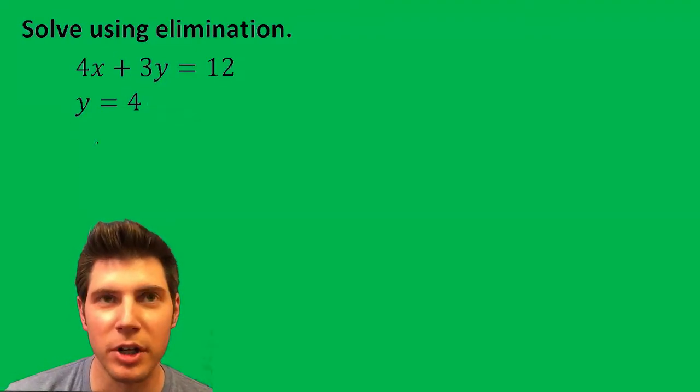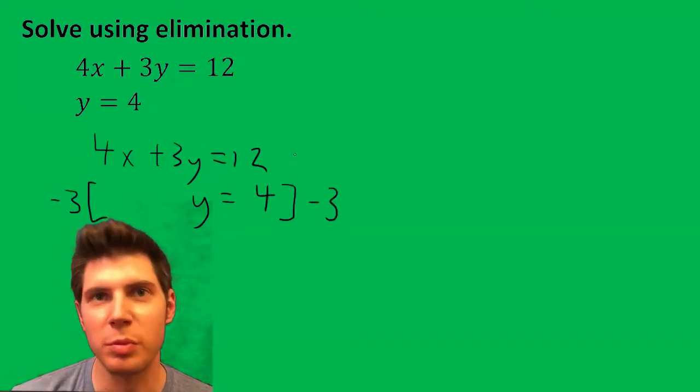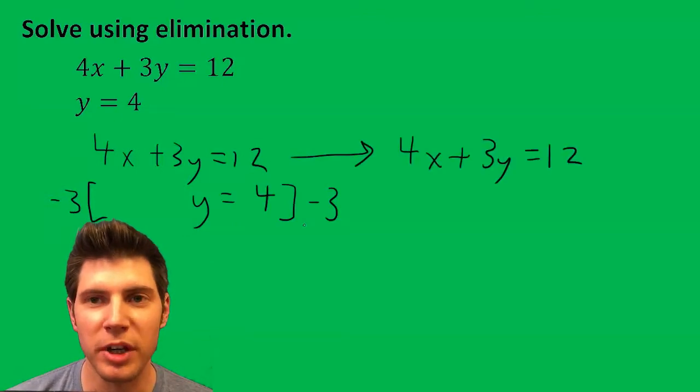What you're going to do is line up your x's and y's. So now the only thing we can eliminate here is the y. So we're going to multiply this row here by negative three. I'll just bring this one over and multiply this by negative three.